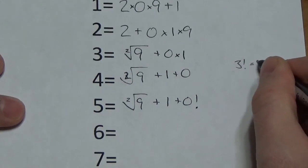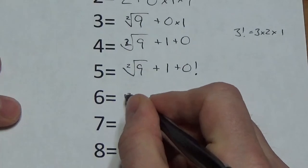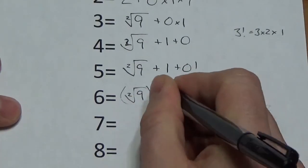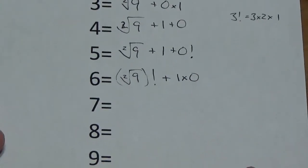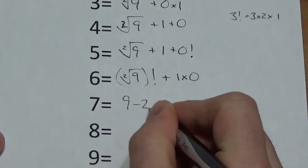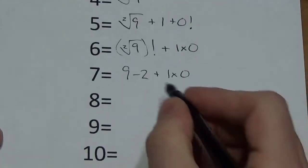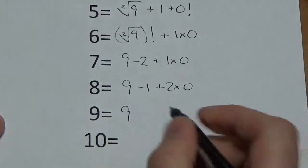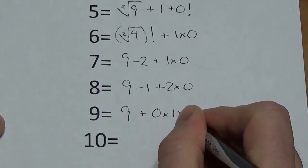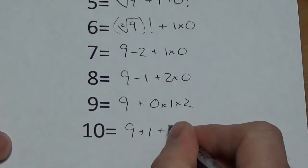That gives me a method for coming up with 6 because I can do the square root of 9 factorial, which would be 6 plus 1 times 0. For 7, I might do 9 minus 2 plus 1 times 0. For 8, I might go 9 minus 1 plus 2 times 0. For 9, I'll just put 9 plus 0 times 1 times 2. And to get 10, I might say 9 plus 1 plus 2 times 0.